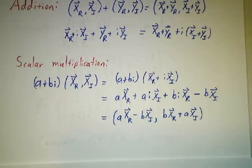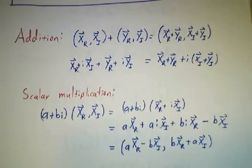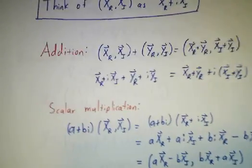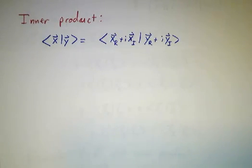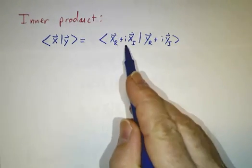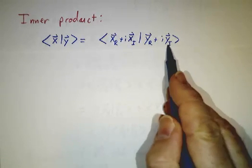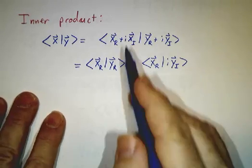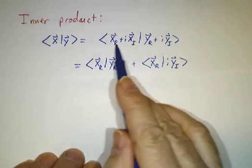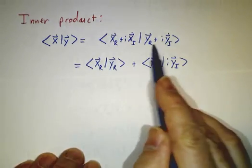So now we've got scalar multiplication, and you can check that all the axioms are satisfied — it's a pretty tedious exercise and I'm not going to do it. Now we go for inner products. How do you get an inner product? If you think of it as being xr plus ixi and yr plus iyi, you can FOIL it, because under addition the left hand piece is linear and the right hand piece is linear, so you get four terms.